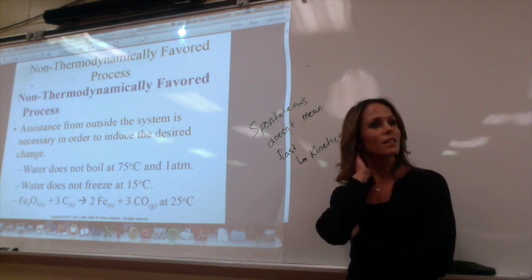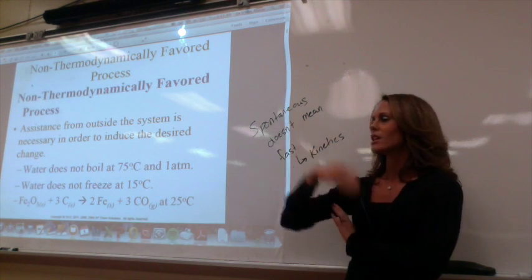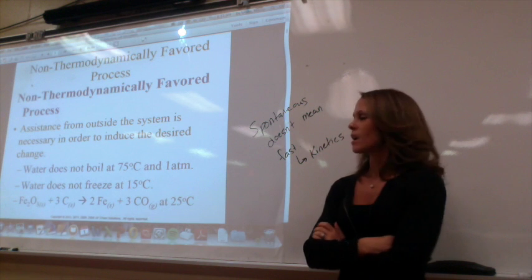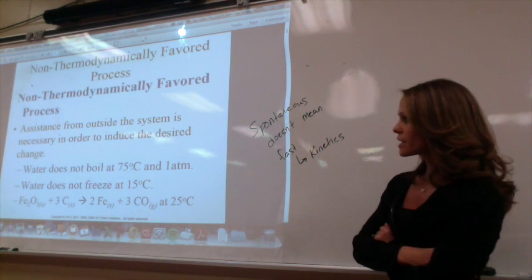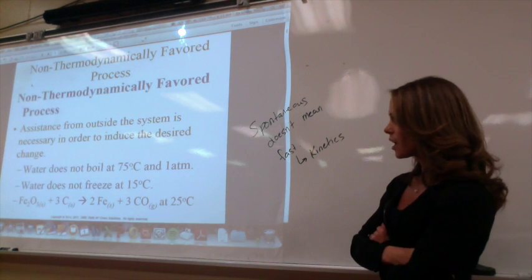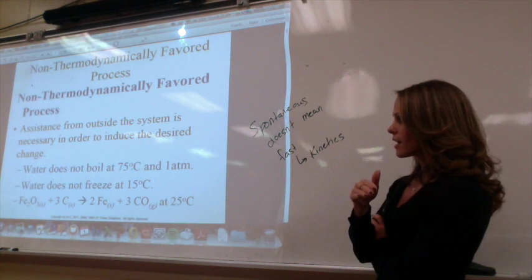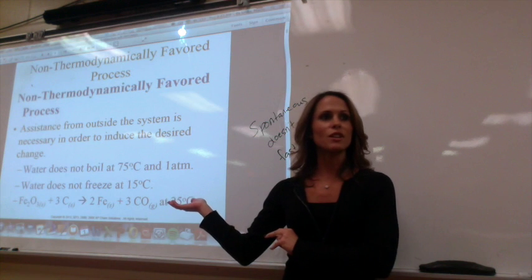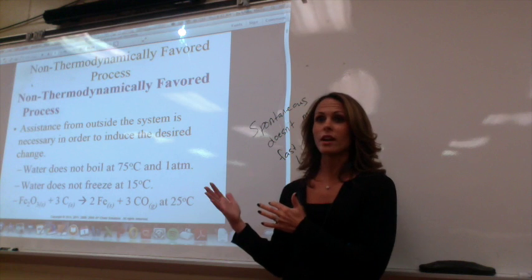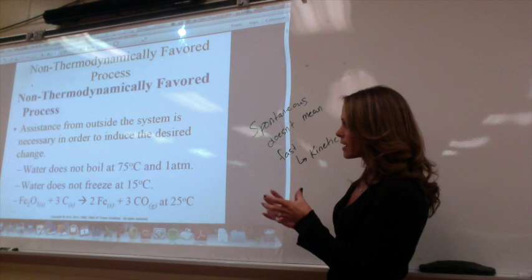Lowering atmospheric pressure — like being up on a mountain — could get water to boil at 75 degrees. Or you use a pressure cooker. Water does not freeze at 15 degrees Celsius, so that's not a thermodynamically favored process. Iron oxide can't unrust on its own, but you can add carbon at really high temperatures to remove the oxide — we did that through Hess's law, combining carbon to reach high temperatures.